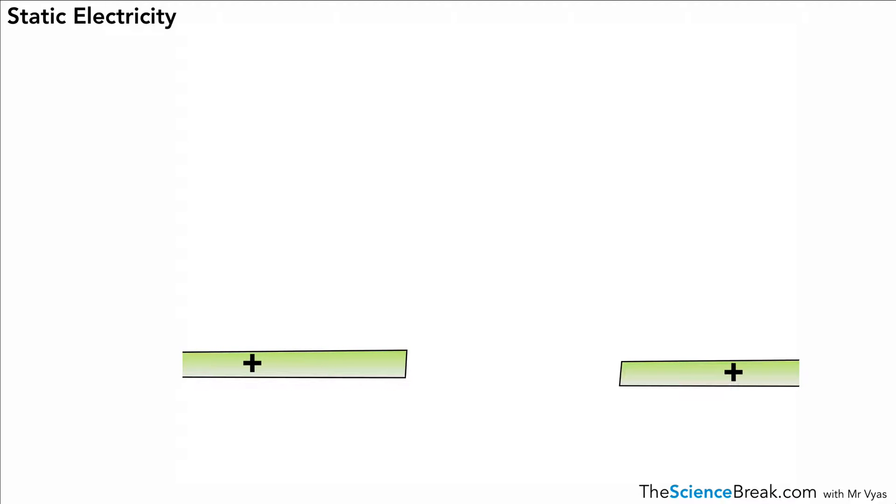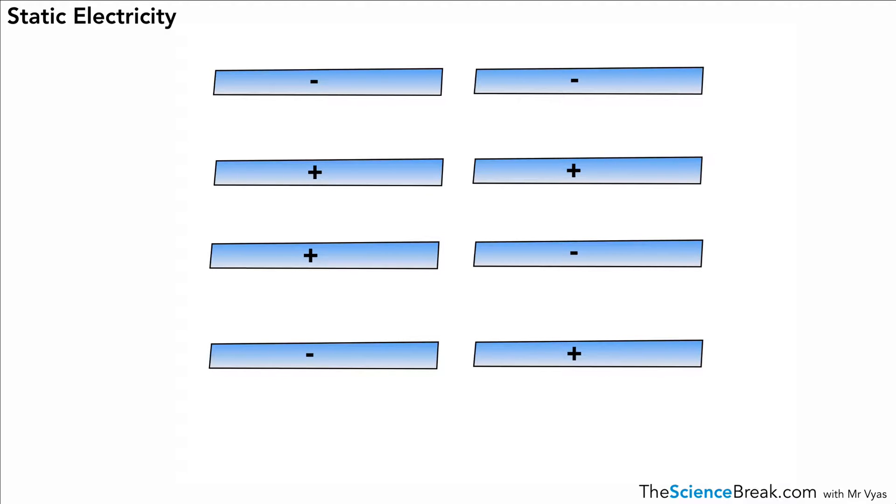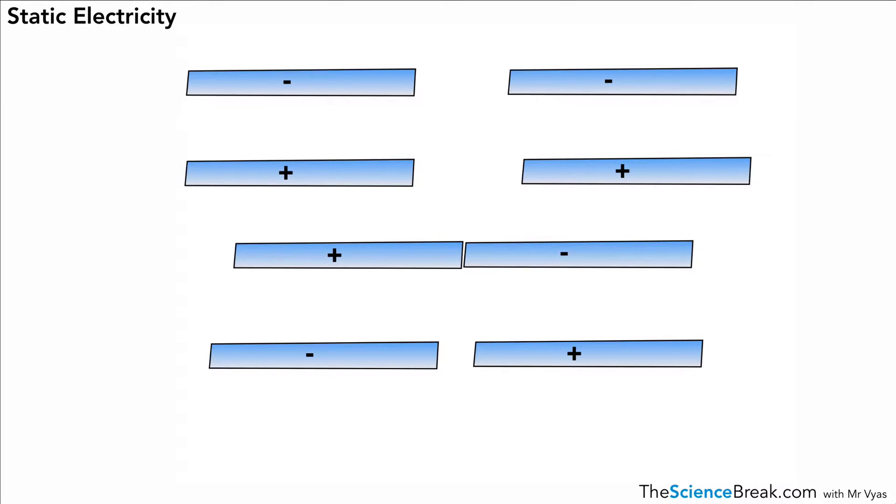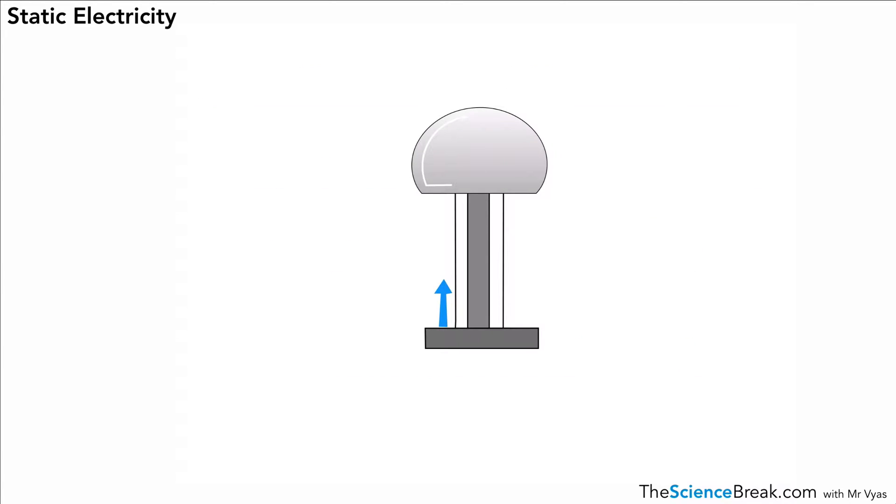So we can take a look at a summary of the different possibilities. At the top we've got two negatively charged rods or two negatively charged objects, and as you can see they repel. Two positively charged objects will repel as well. But if the objects have opposite charges, they will attract, as shown by diagram number three or the third one and the fourth one. So this is all the possibilities for attraction and repulsion depending on static electricity or electrical charge.